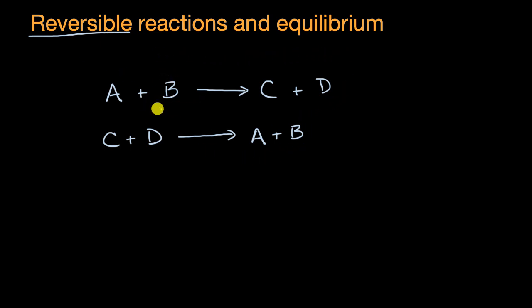One way to say that it could go in either direction is to write it like this: A plus B, and we use these half arrows, so it could go in that direction or it could go in this direction, to C plus D.